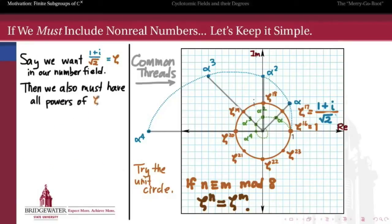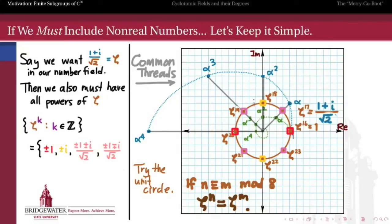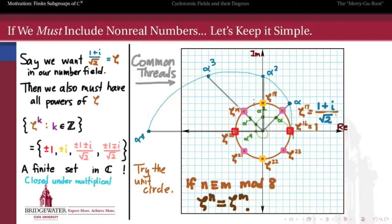The observation is that since we have to have all powers of zeta if we want zeta in our number field, we should make it so there are as few of those as possible. In this example, the set of all powers of this particular zeta, 1 plus i over radical 2, is a finite set consisting of only plus and minus 1, plus and minus i, and plus and minus 1 plus and minus i over radical 2 — just those eight points lying at the vertices of a regular octagon on the unit circle. Not only is it a finite set in the complex numbers, but because it's the set of powers of the same zeta, it's closed under multiplication, making it a finite subgroup in the group of non-zero complex numbers under multiplication.